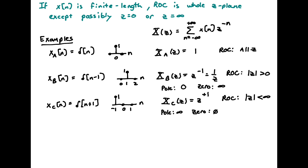Then we have XC of n equals delta of n plus 1, the same delta function shifted one to the left. Plugging into our sum, we get XC of Z equals Z — Z to the positive one. Now the pole is at infinity, because when Z is infinity this expression blows up. The zero is at zero. So the region of convergence is absolute value of Z less than infinity — it converges everywhere except where Z is infinity.